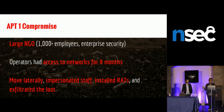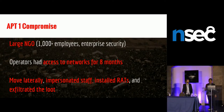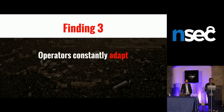What did they do with that access? The typical stuff — they moved laterally, impersonated staff, installed RATs, and exfiltrated data. This is discussed in the Mandiant report, but not within an NGO context, which is important. Finding three: these operators constantly adapt. The adaptations are often in response to defensive measures from the targeted groups. The Tibetan community has been facing these kinds of attacks for over a decade. They are the canaries in the coal mine, and they're not laying down — they're trying to empower their community through education and trainings.